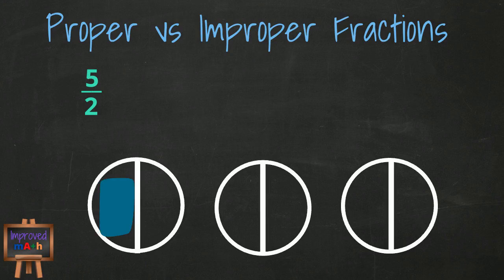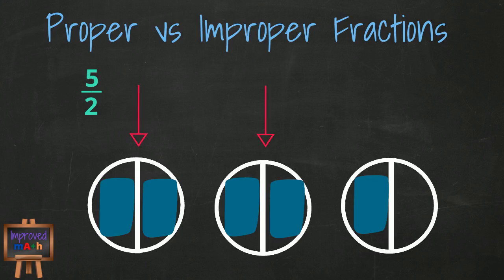1 half, 2 halves, 3 halves, 4 halves, and 5 halves. Notice now that we have two whole circles checked, and then we have one half of the third circle checked.